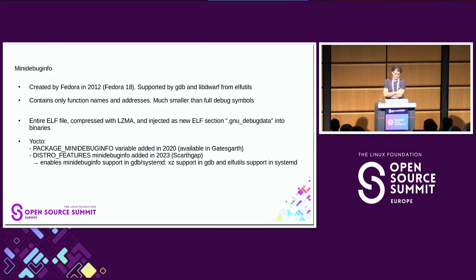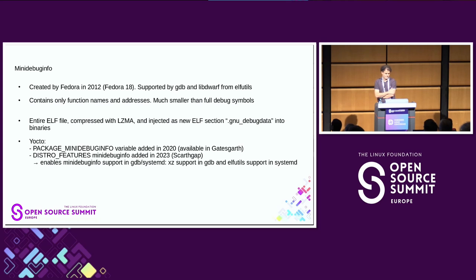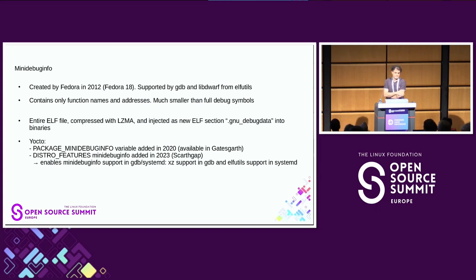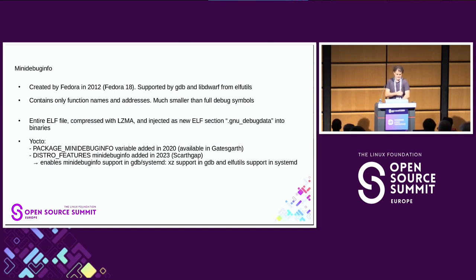Another way to handle this is mini-debuginfo, a feature created by Fedora — supported also by GDB and libdwfl from elfutils. This is a reduced debug symbol format that only contains function names and their addresses, which is much smaller than traditional full debug symbols, which also contain variables, file names, line numbers, etc. The mini-debuginfo symbols have the format of an entire ELF file, compressed with LZMA and injected as a new ELF section called .gnu_debugdata inside your binary.